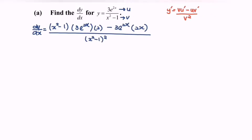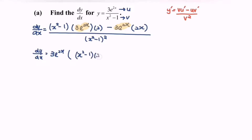Kindly observe the situation. Here we have 3 multiplied with e to the power 2x — same goes to this part. So what we have to do is factor out the 3 multiplied with e to the power 2x. So dy/dx is equal to 3e to the power 2x, bracket, x squared minus 1 multiplied with 2 minus 2x, over x squared minus 1 to the power of 2.